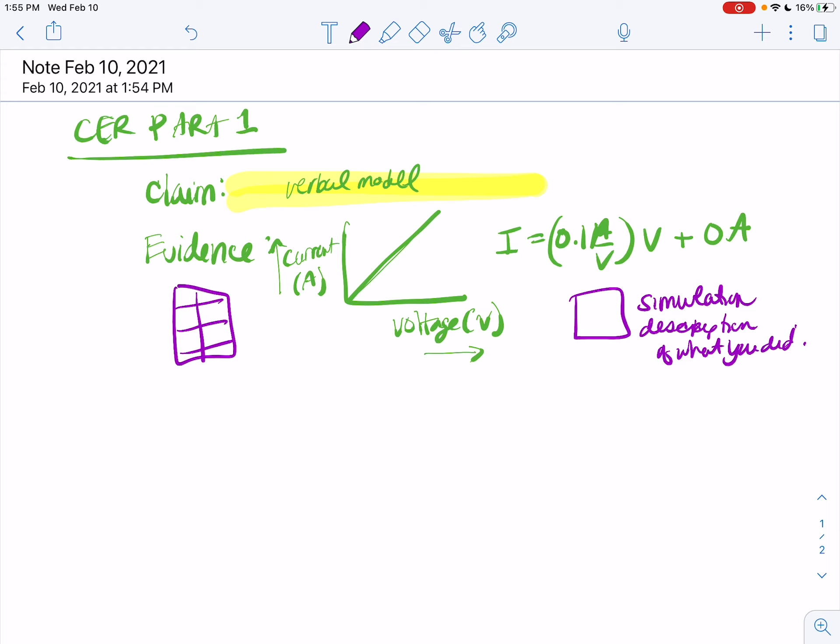All right, so for reasoning, let's go through how we got this graph in case you're not sure. So you had your current here in amps and your voltage here in volts, and you had a line. And the slope of this line was probably 0.1 if you used the 10 ohm resistor. If you used a different resistor as your constant, then that's going to be different. So this is a line, y equals mx plus b.